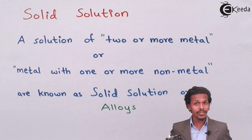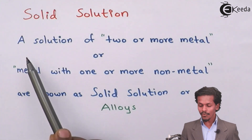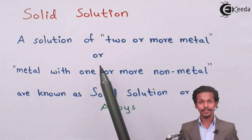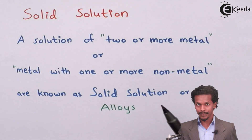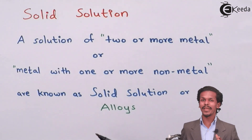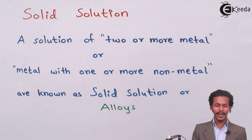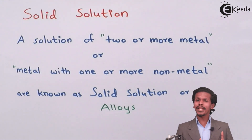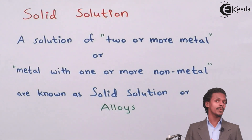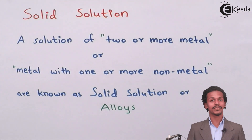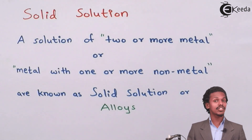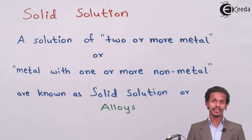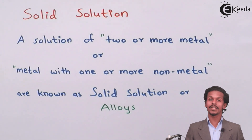A solid solution is nothing but a solution of two or more metals, or a solution of a metal with one or more non-metals. These are known as solid solutions, or basically known as alloys. Two metals cannot be mixed with each other at normal temperature, so they are mixed at high temperature.